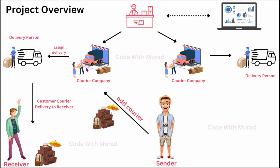Once the courier company, customer, and delivery persons are all registered, the customer can visit the courier company and hand over the courier they need to send. The courier company enters the correct details about the courier — type (gift, luggage, etc.) — and the receiver's name, address, and other details.